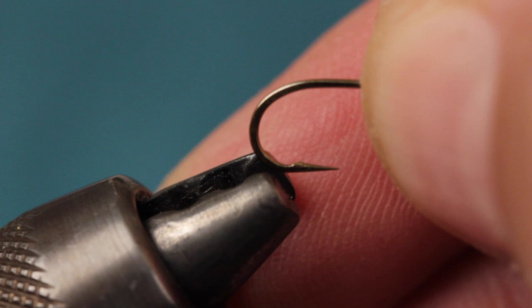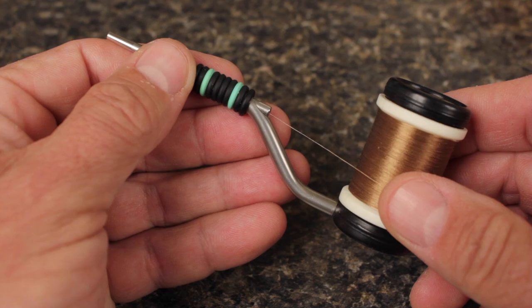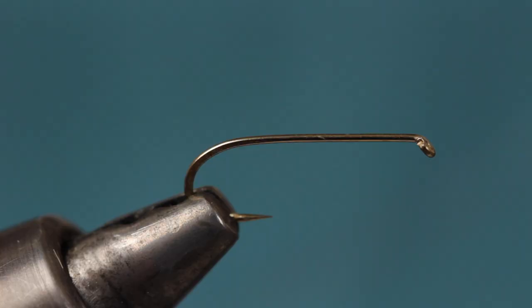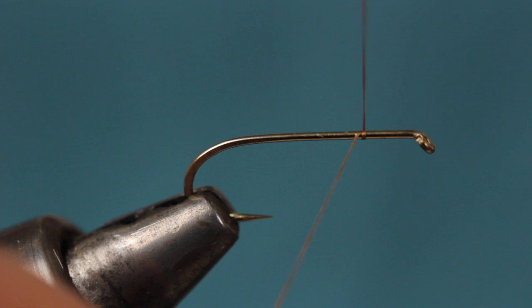Start by mashing the barb and getting the hook firmly secured in your tying vise. For thread, I've loaded a bobbin with a spool of Olive 6-0 Danville. Get your threads started about one-third of the way down the hook shank and take wraps rearward before snipping or breaking off the tag.